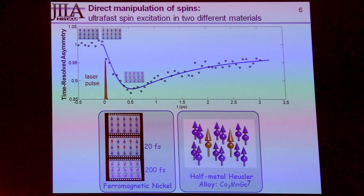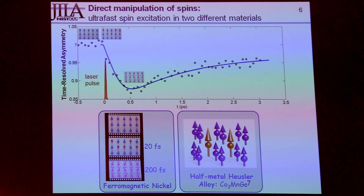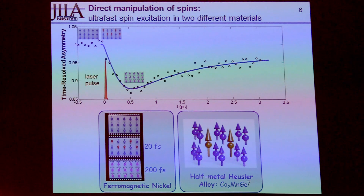This brings us back to the characteristic trace I showed at the beginning. We have a time-resolved magnetic signal, and for this example — ferromagnetic nickel — you can see that when the laser pulse comes at the beginning, the signal decreases in time. For the first experiment I'll tell you about, this is ferromagnetic nickel. The second is a more complicated half-metallic Heusler alloy, where we probe both elements simultaneously — the cobalt and the manganese.